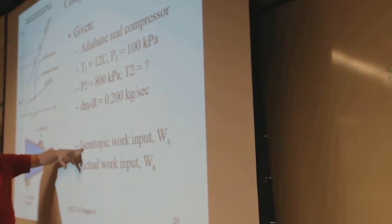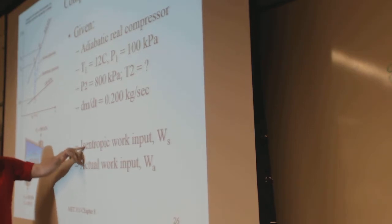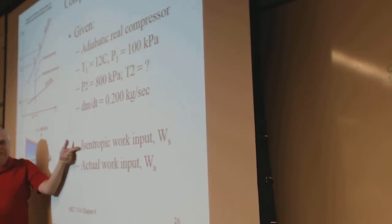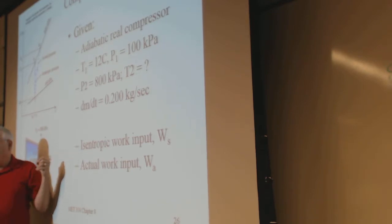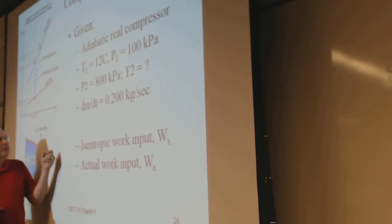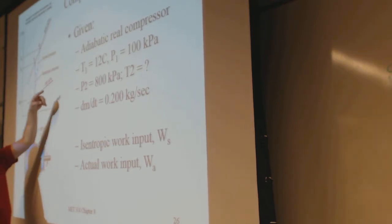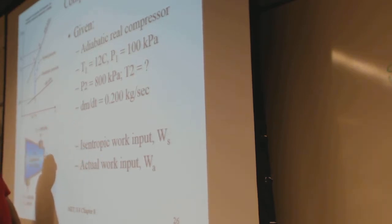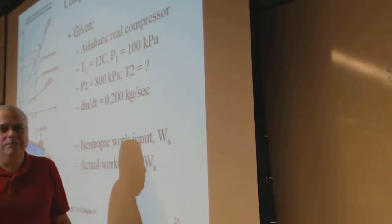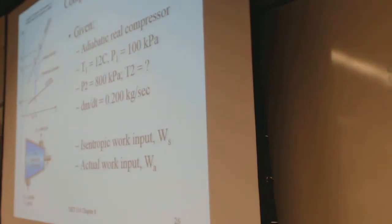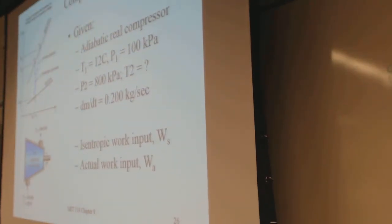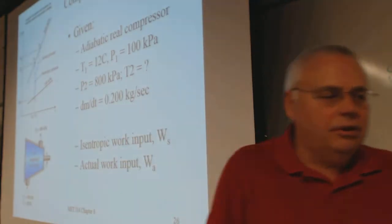We want to find out how much thermodynamic work we're doing and how much actual shaft work it takes to get it done. The isentropic process — something with the same entropy — gets us the best case, the 100% efficient case. In the real world we're only 80%. There was a data point with 80% isentropic efficiency from the design.